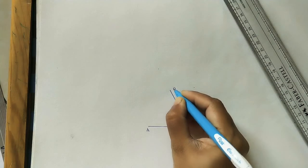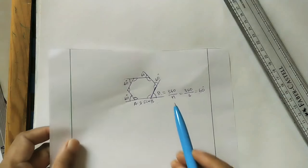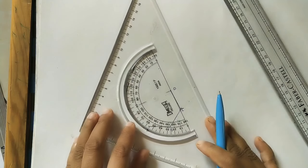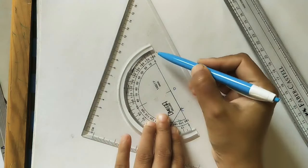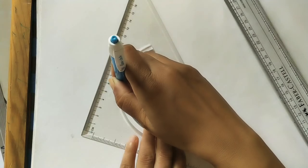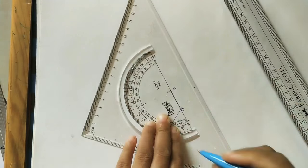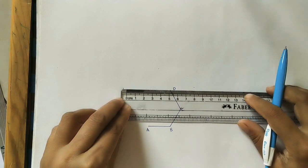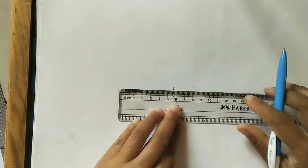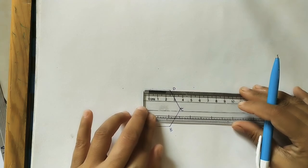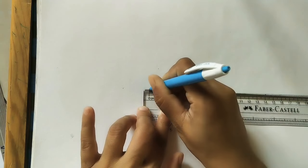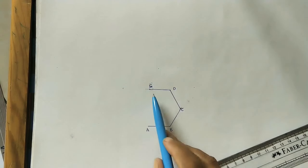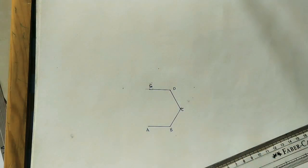After getting C, take 60 degrees from the line at C and mark 2.5 centimeters in that direction to get point D. Then at point D, take 60 degrees again and mark 2.5 centimeters in that direction to get the next vertex. Extend and mark 2.5 centimeters to locate point E.